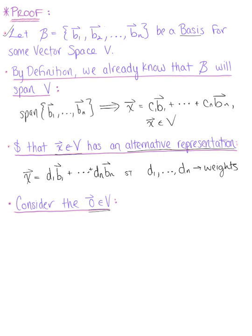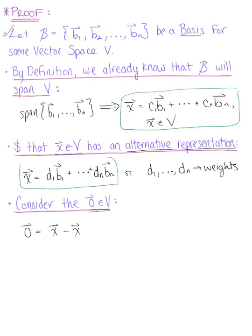Keeping in mind that the goal is to show the scalars are unique, we consider the zero vector in our vector space. We know that we can rewrite the zero vector as the difference of the two representations of vector x. So plugging them in, we have c sub 1 times vector b sub 1 plus all the way to c sub n times vector b sub n, minus d sub 1 times vector b sub 1 plus all the way to d sub n times vector b sub n.